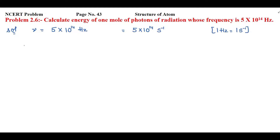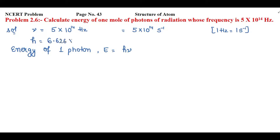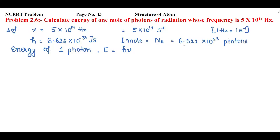The formula for energy of one photon is E = hν, where h is Planck's constant. Its fixed value is 6.626 × 10⁻³⁴ joule·second. In one mole we have Avogadro's number of photons, so 1 mole equals 6.022 × 10²³ photons. Now let's put the values in.